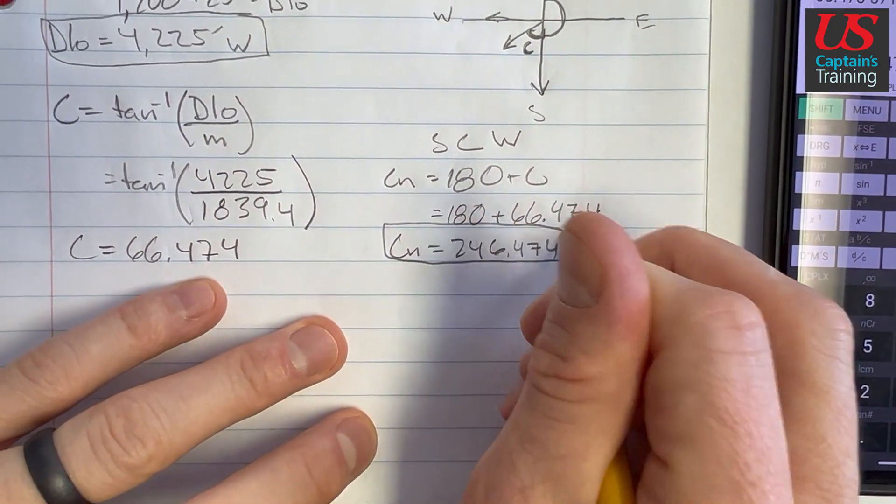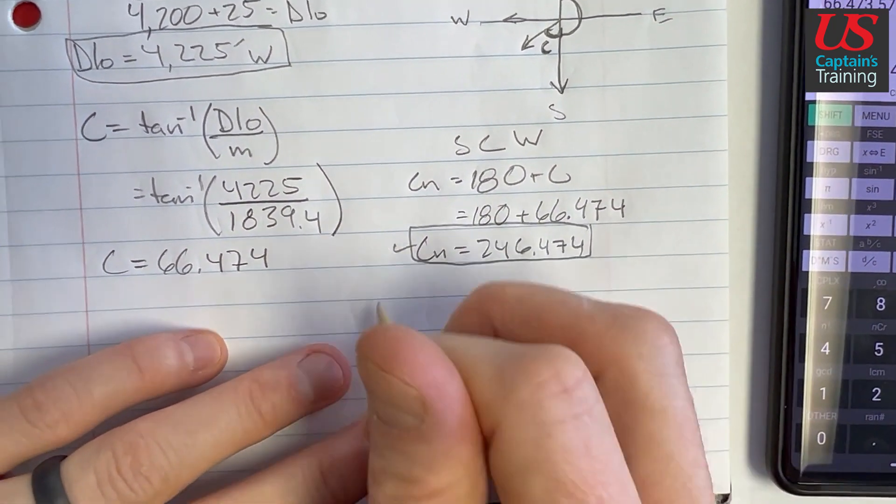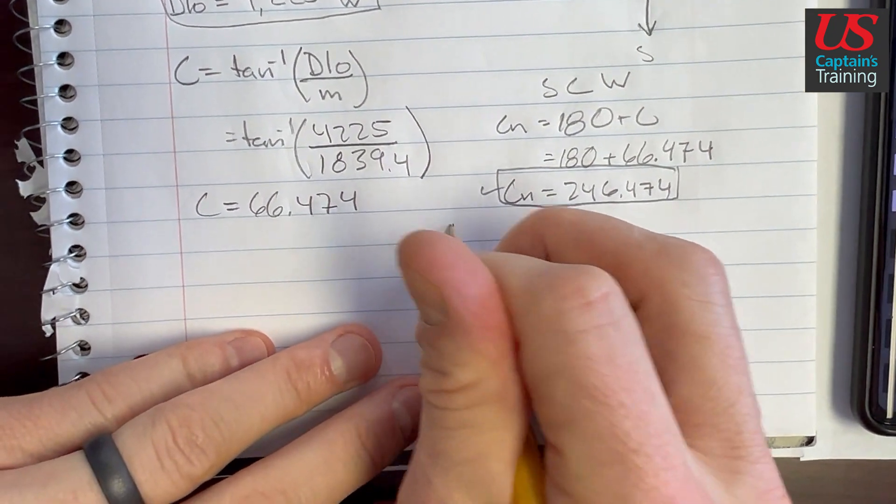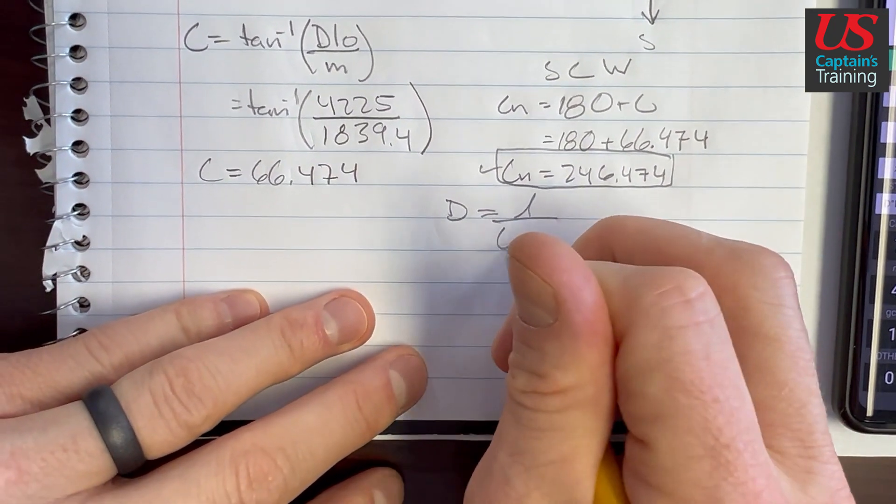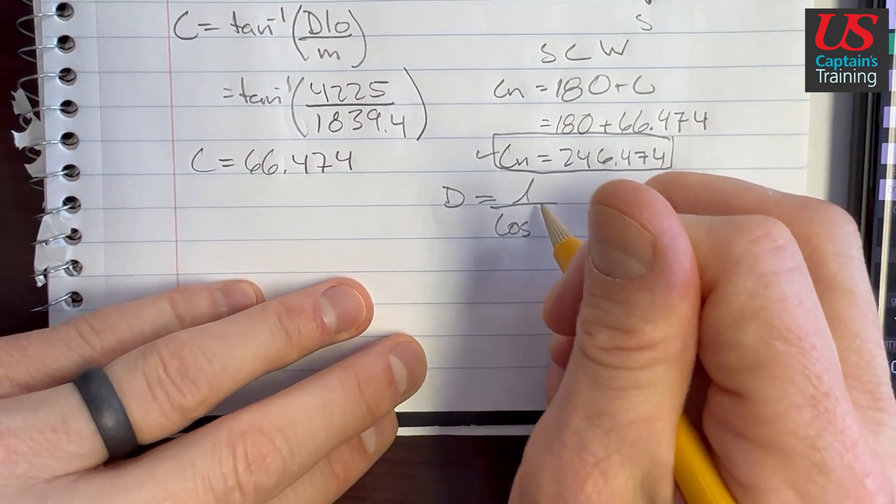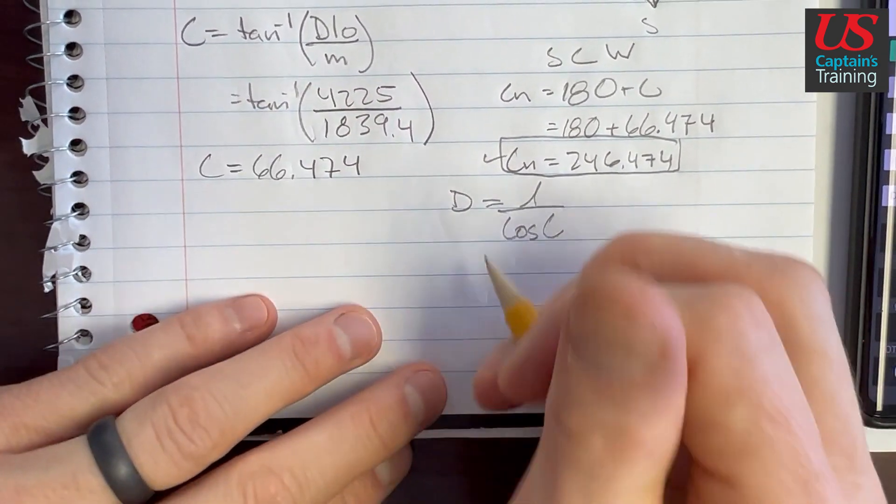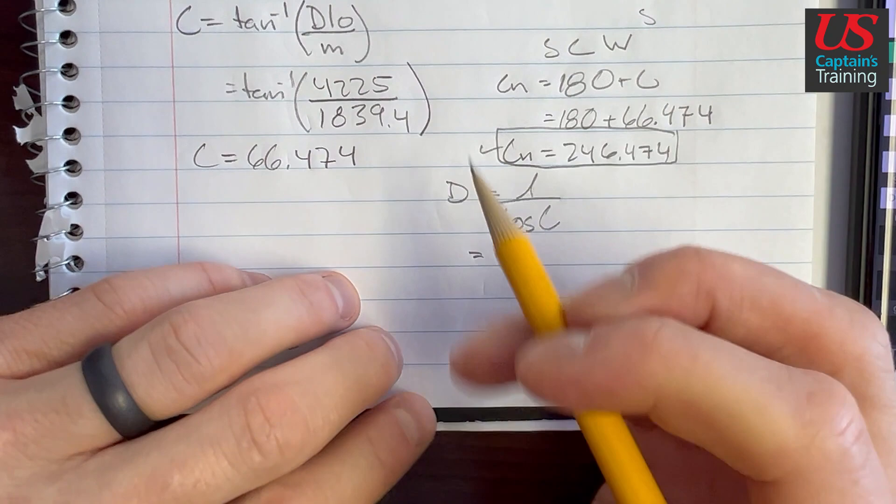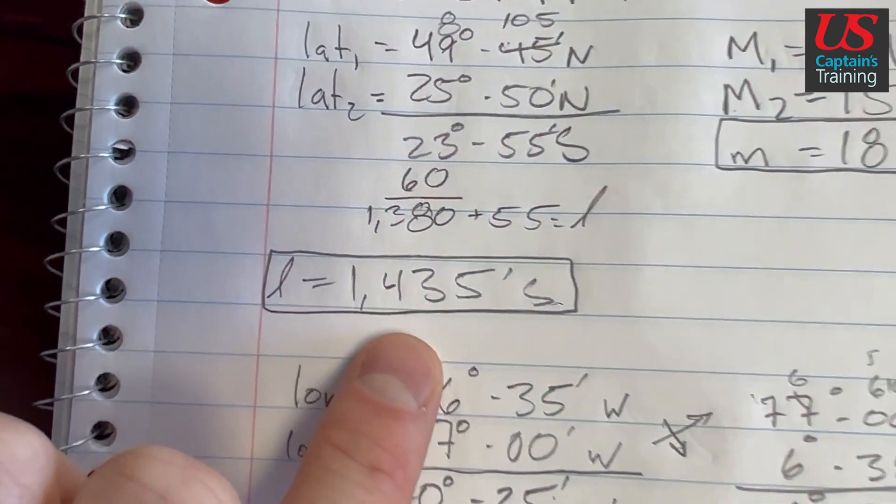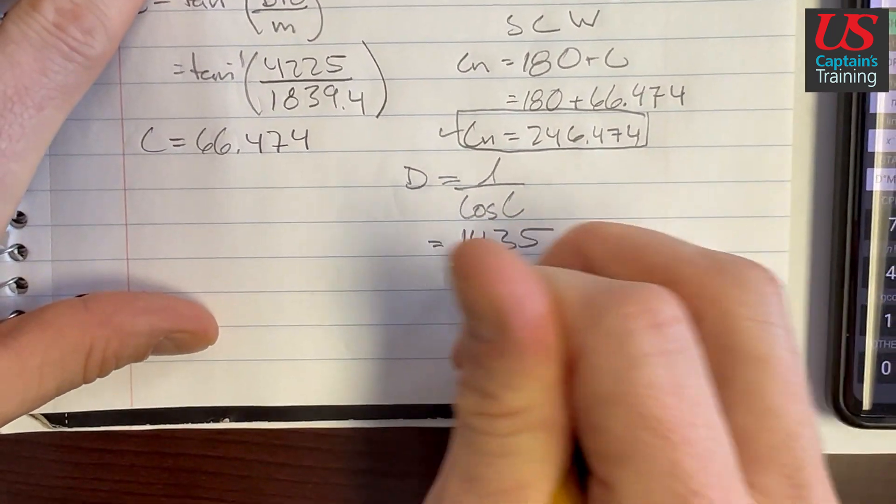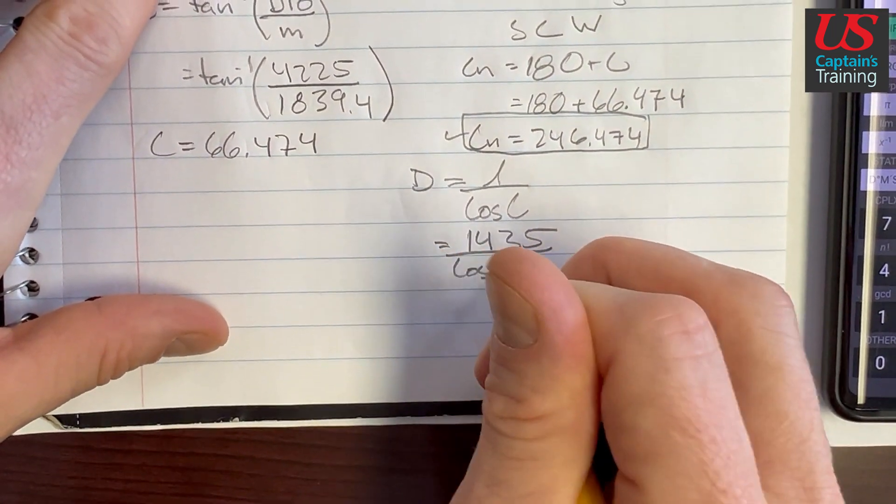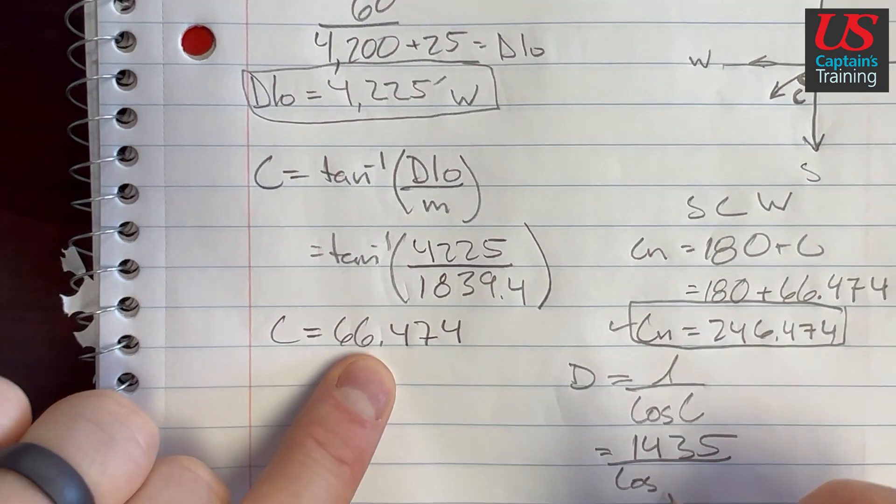Now let's find distance. Distance is equal to little l over cosine C. So this will equal little l, which is up here, 1435. So 1435 over the cosine of C, which is here, 66.474.